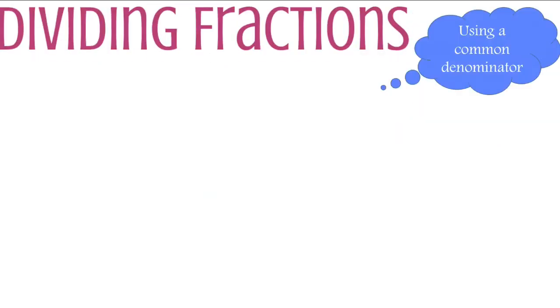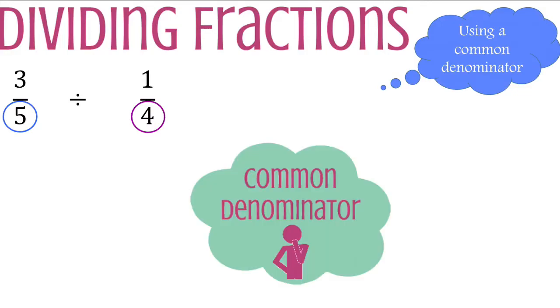How do we find a common denominator? Three-fifths divided by one-fourth. Currently the denominators are five and four. Some of you may already know what the common denominator is. Some may list out multiples. I'm going to use a different method.